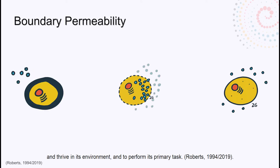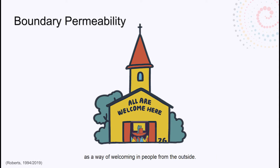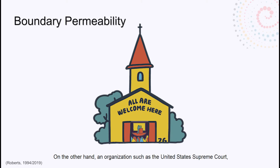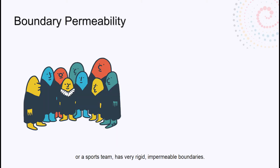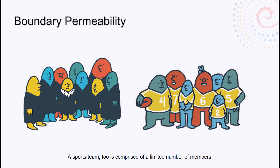Boundaries must allow the system to perform its primary task. For example, some religious congregations may have relatively relaxed, permeable boundaries as a way of welcoming in people from the outside — non-members, community members, and outsiders are free to attend regular services. On the other hand, an organization such as the United States Supreme Court or a sports team has very rigid, impermeable boundaries. Only nine people can sit on the Supreme Court at any one time, and a sports team is comprised of a limited number of members — outsiders trying to breach the boundary are swiftly cast out.